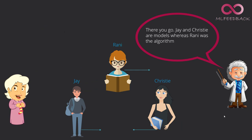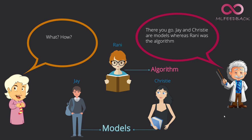Albert says, you said the answer yourself. Jay and Kristi are models whereas Rani was the algorithm. Granny was shell shocked. What? How? How can you make that inference?